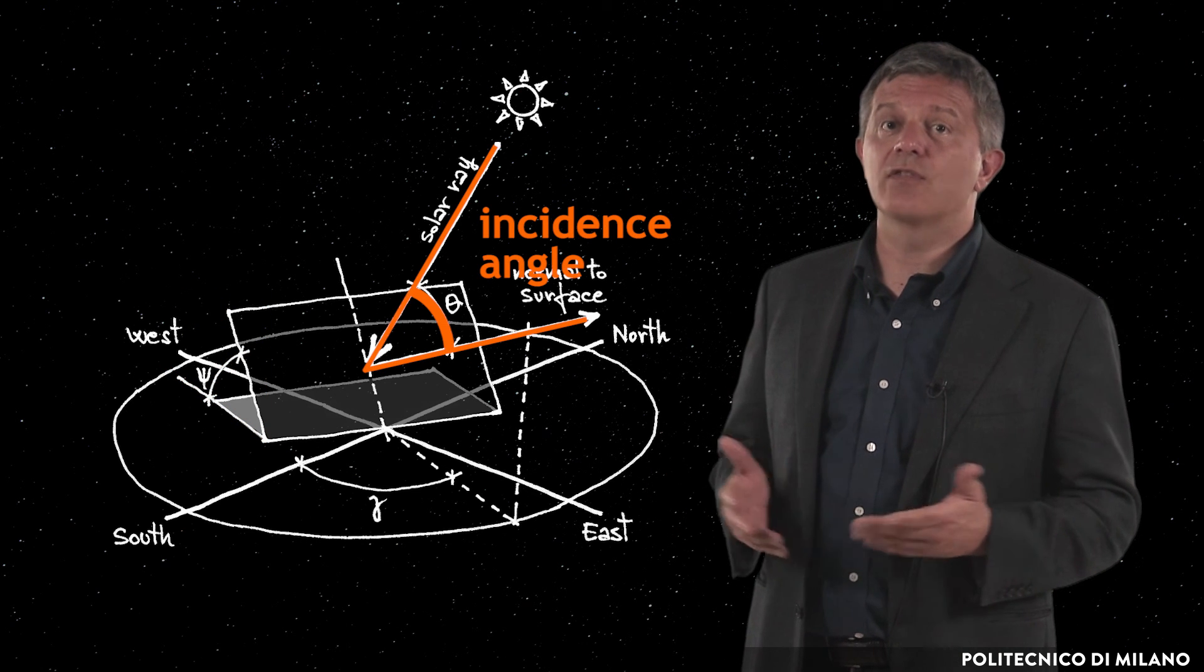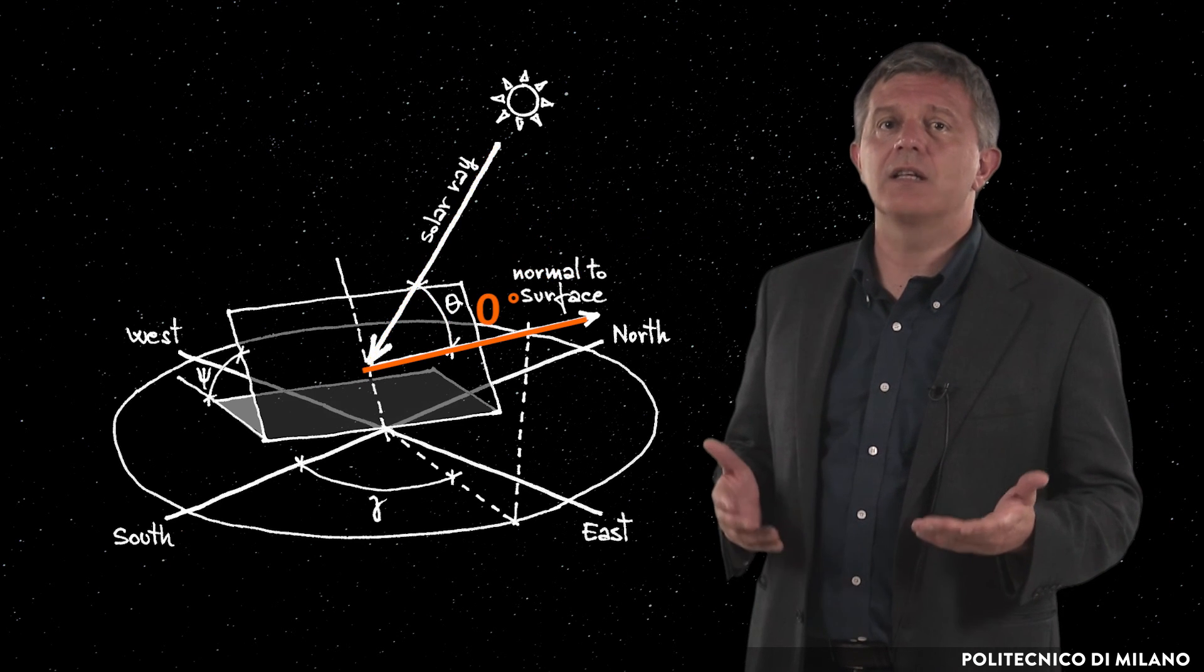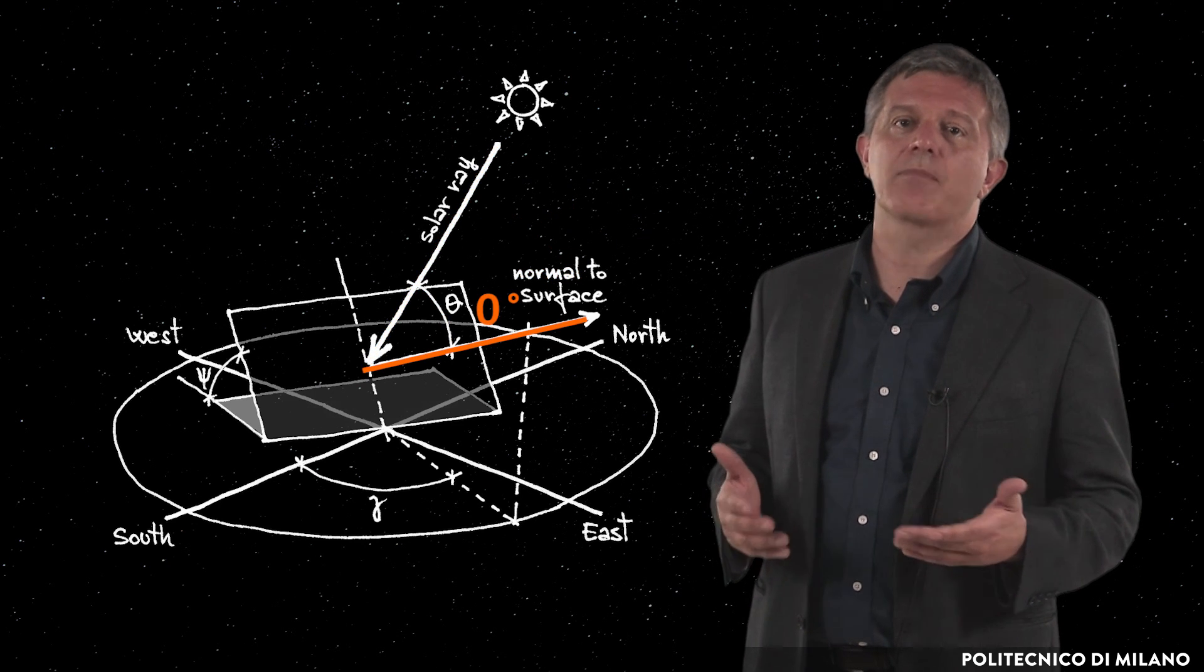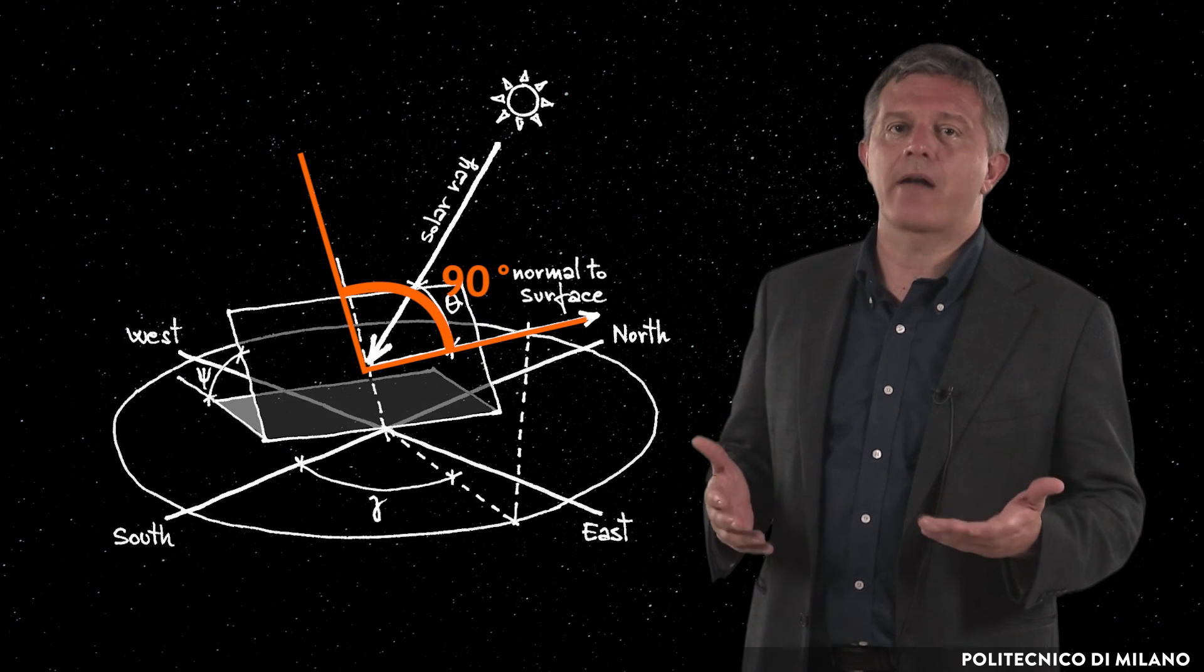Zeta, incidence angle, is formed by the sun rays with the normal to the irradiated surface. It is zero degrees when sun rays are perpendicular to the surface and 90 degrees when they are parallel to it.